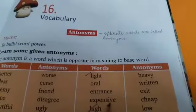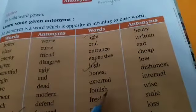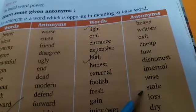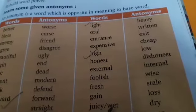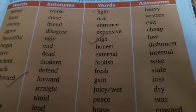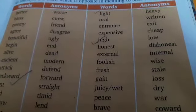Light, heavy — light hai toh heavy hona. Borrow, return. Entrance, exit. Expensive, cheap. High, low. Honest, dishonest. External, internal. Foolish, wise. Fresh, stale. Gain, loss. Wet, dry. Peace, war. Brave, coward. Able, unable. Blend, sharp. Bright, dull.